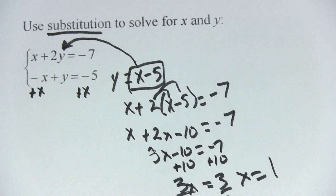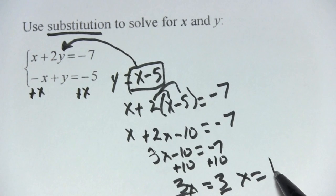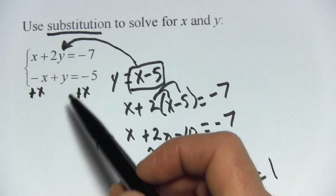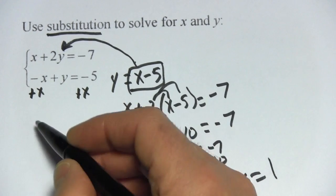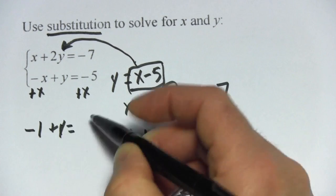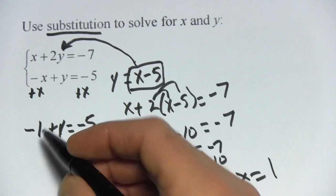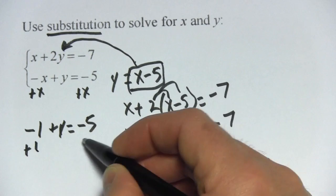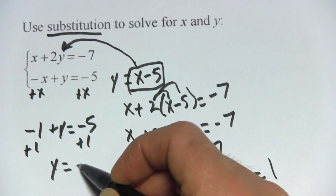Not done though, we've just found x, we need to find y, but pretty easy here. We can take this one and stick it in to either of these equations. I'm going to stick it in the bottom one. So that would be negative, our x value is 1, plus y equals a negative 5. We add 1 to both sides, and we get y equals negative 4.